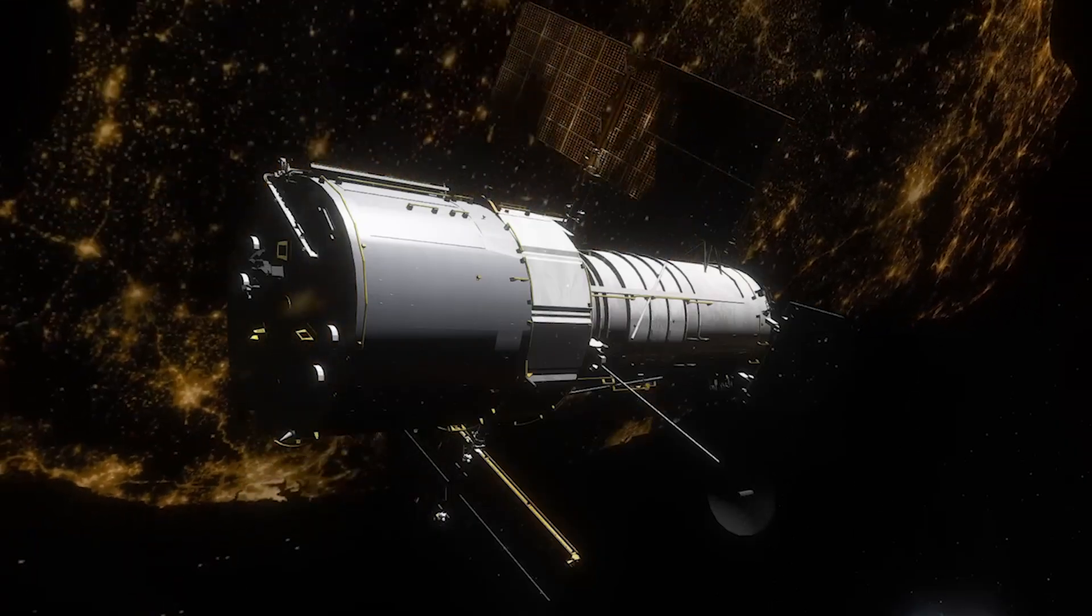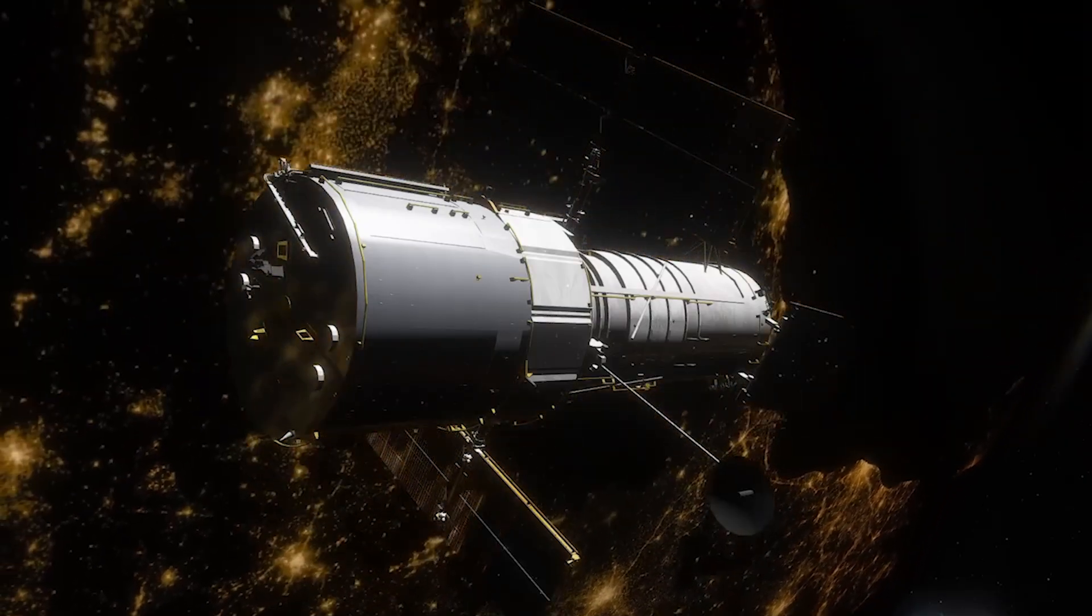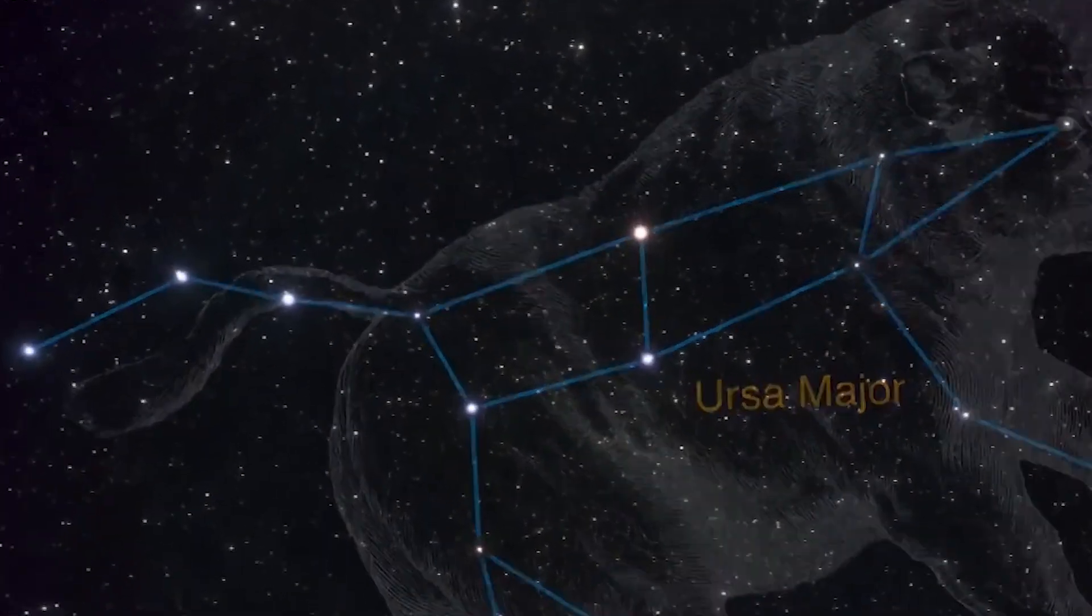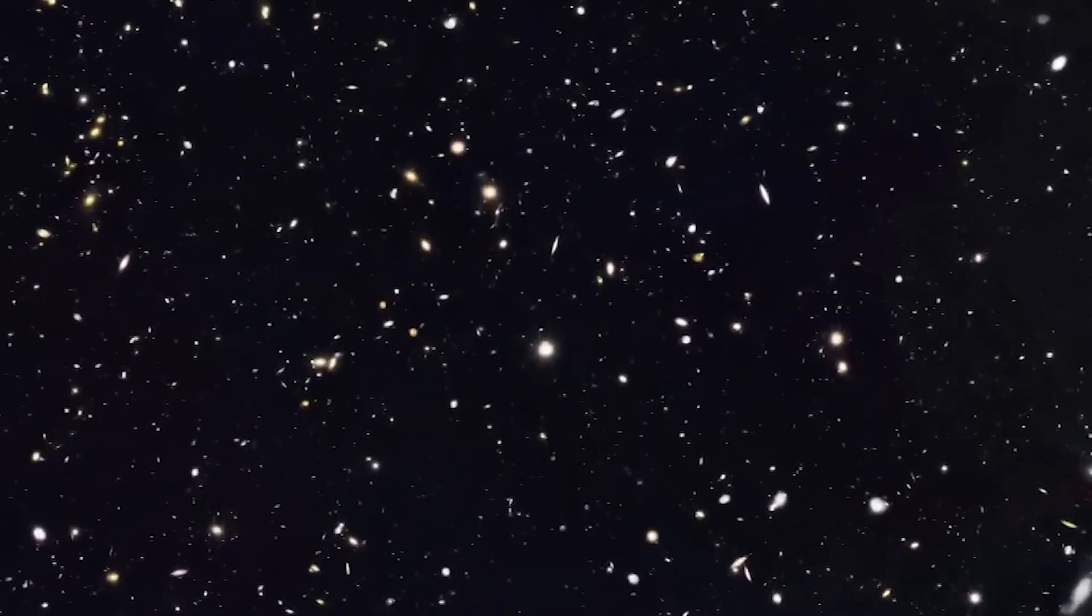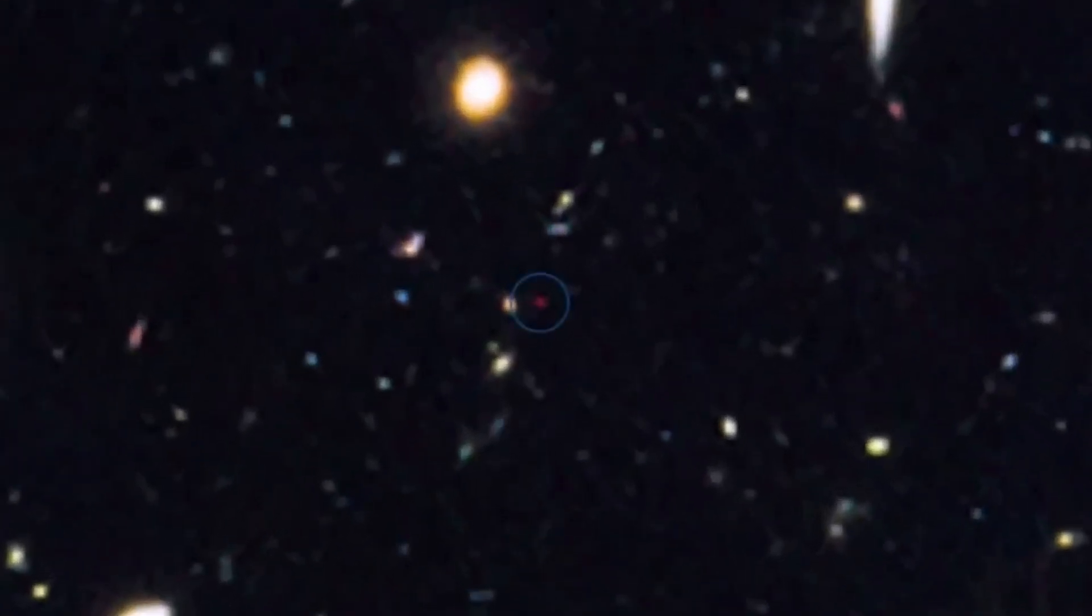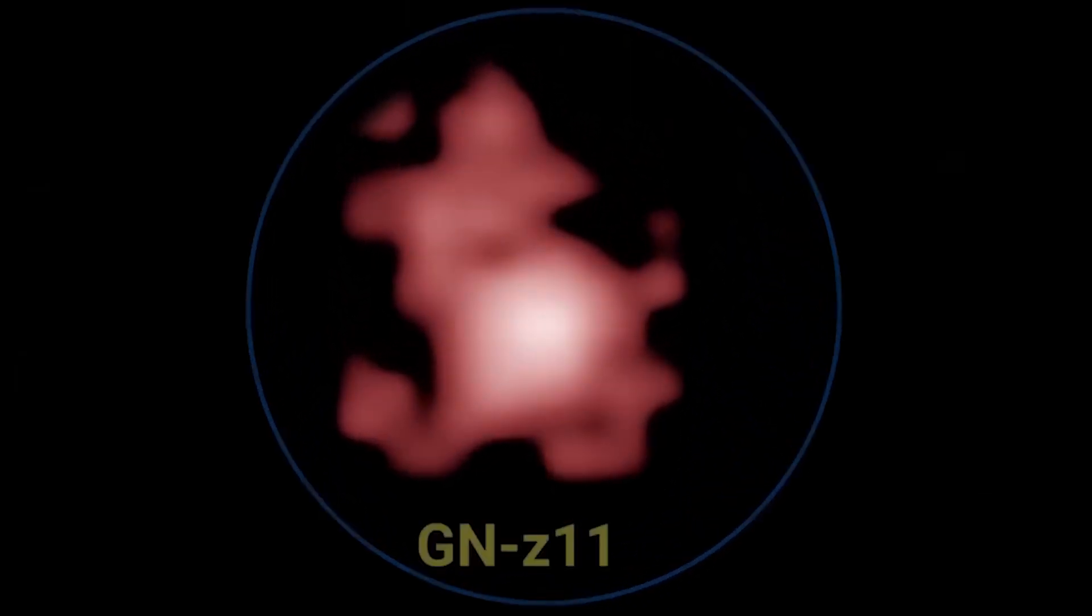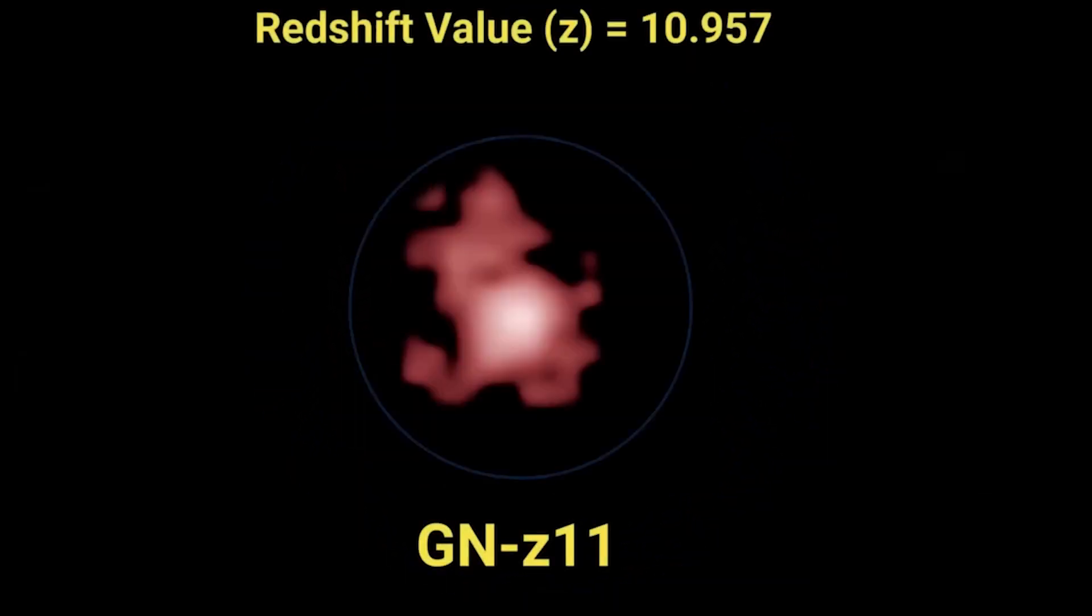The Hubble Space Telescope's observational range extends from ultraviolet to near-infrared light, limiting its ability to detect extremely distant galaxies, such as GNZ 11, which exists 13.4 billion years in the past, just 400 million years post the Big Bang.